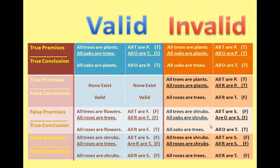This table shows that the truth value of statements has absolutely nothing to do with whether the structure of an argument is valid or invalid. With all the various possible combinations of truth value, we can get both valid and invalid structures. The only exception is that a valid argument will never give you true premises and a false conclusion.